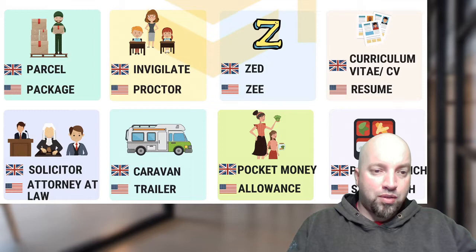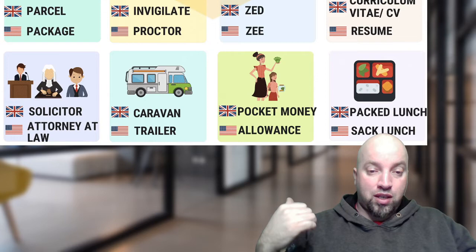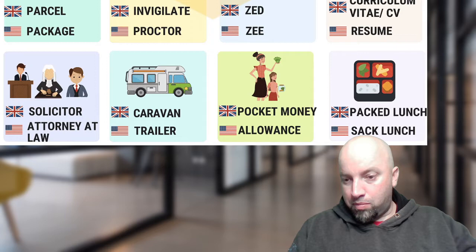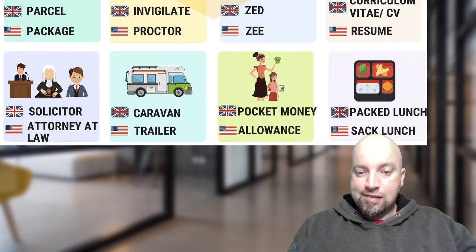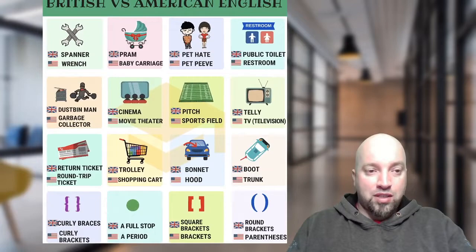A proctor is a person that gives or monitors a test — I didn't know that, I learned something new today, thanks Danny. 'Pocket money' or 'allowance' — we would say 'allowance.' Just two more slides to go through, guys, and then we'll get to the quiz. 'Spanner' or 'wrench' — I've heard both, so we would go with either the American or the British on that one.